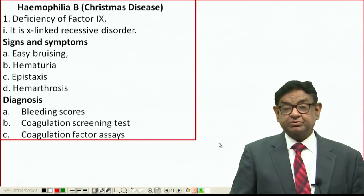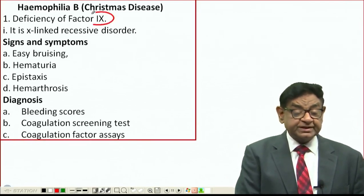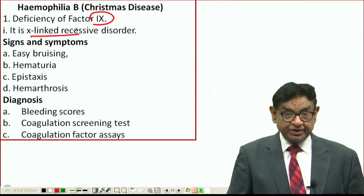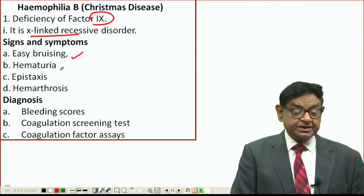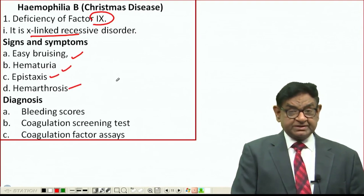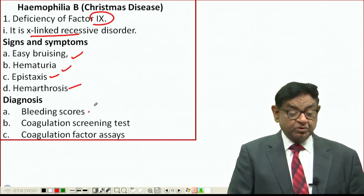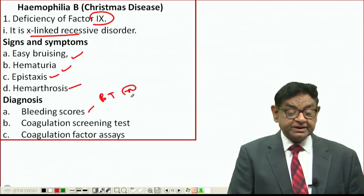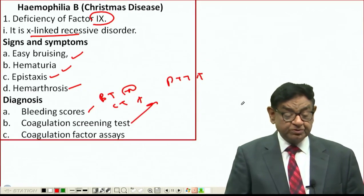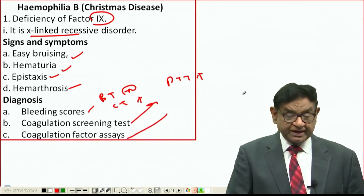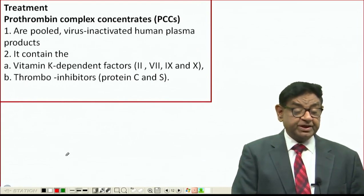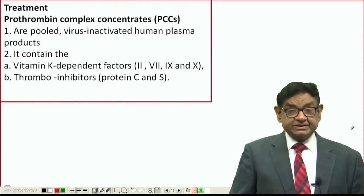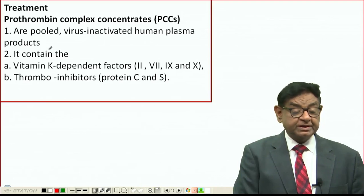Haemophilia B is also known as Christmas disease. It is due to Factor 9 deficiency and is again X-linked recessive, just like Haemophilia A. Clinical signs and symptoms include easy bruising, haematuria, epistaxis, and haemarthrosis — just like Haemophilia A. Bleeding time is normal, clotting time is prolonged, and PTT is prolonged. Factor 9 level will be reduced in these cases.